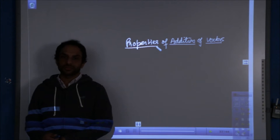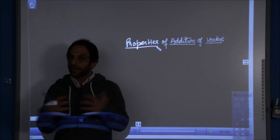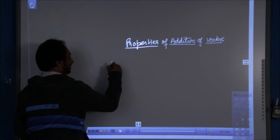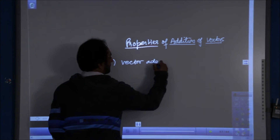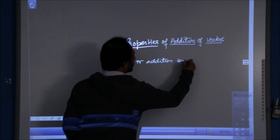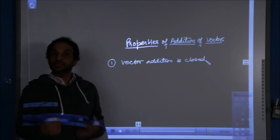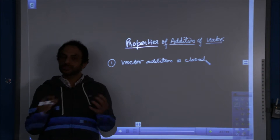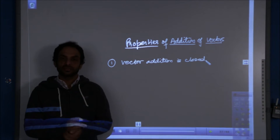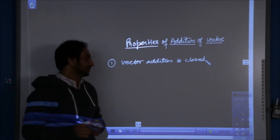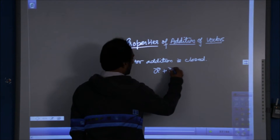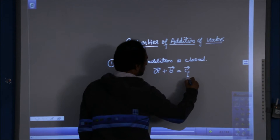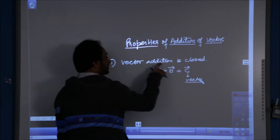Now, the properties of addition of vectors. The very first property says that vector addition is closed — it obeys the closure law. It is a binary operation: if we add two vectors, the resultant also stays within that definition, meaning vector plus a vector is also a vector. So if I have vector A and vector B and I add them, the resultant vector C is also a vector. Hence, vector addition is closed.